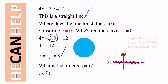So what is the ordered pair? It is (3, 0). This point, (3, 0), is our x-intercept. We have one of the points — this is our blue point. Now we need one more, because to draw a straight line we only need two points.